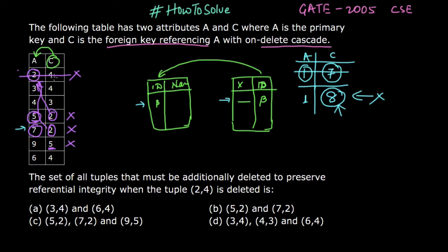In order to delete the first tuple, that is (2, 4), we have to delete these 2 tuples. And to delete this tuple, that is (5, 2), we have to delete this tuple.